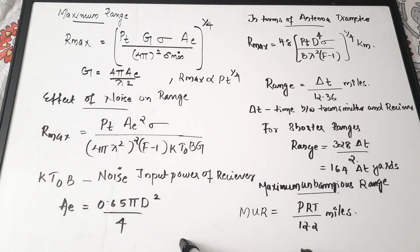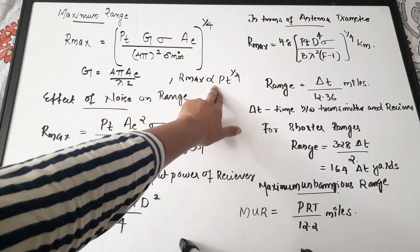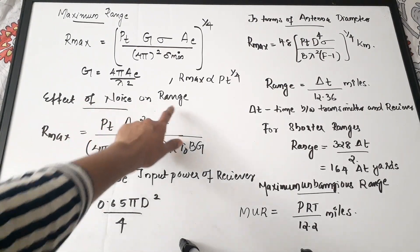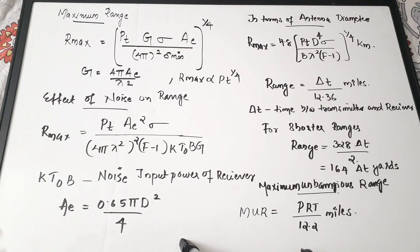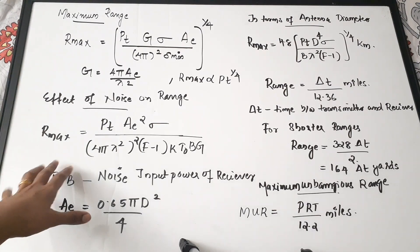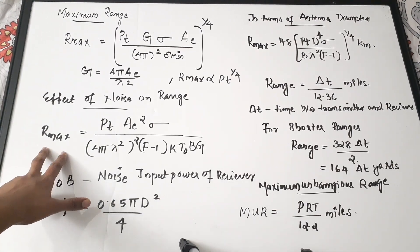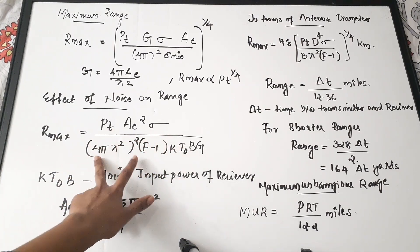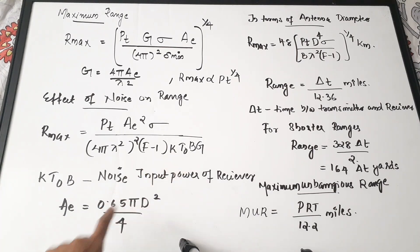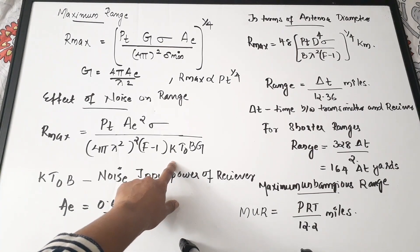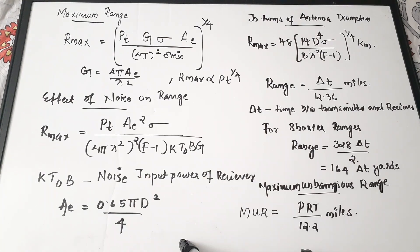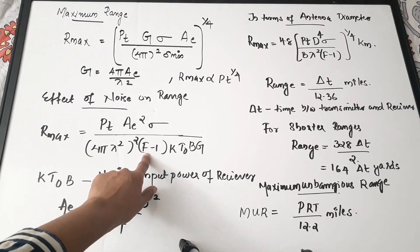Gain can be represented in terms of antenna aperture and wavelength: G equals 4π × Ae divided by λ². From this, R_max is directly proportional to Pt raised to the power of 1/4, where Pt is the transmitter power. Now the effect of noise on the range: R_max equals the fourth root of (Pt × A² × σ) divided by (4π × λ² × (F−1) × k × T0 × B × G).